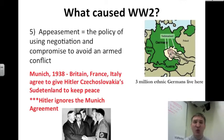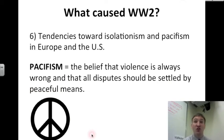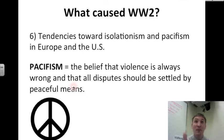But after Hitler gets what he wants, he then ignores the agreement between him and these European powers. He wants more and he gets it. Another cause of World War II: the tendencies toward isolationism and pacifism in both Europe and the U.S. Pacifism is the belief that violence is always wrong and that all disputes should be settled by peaceful means. Maybe to stop a dictator like Hitler, you need to be violent to show him you mean business.